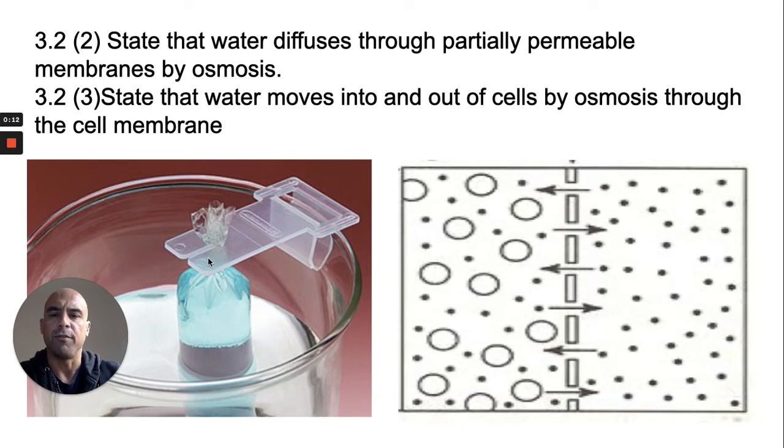This photograph here shows visking tubing. Visking tubing is often used in kidney dialysis. Its key feature is that it has a partially permeable membrane.